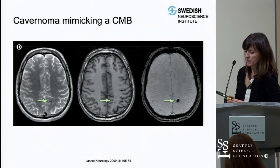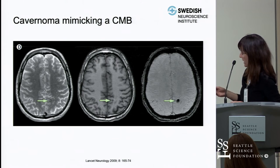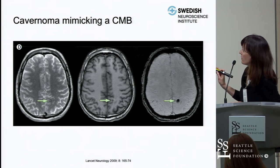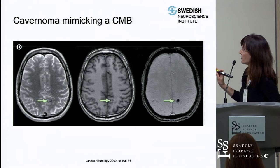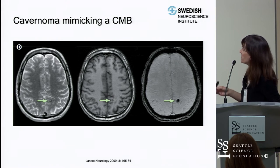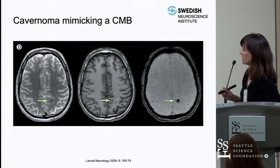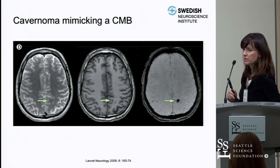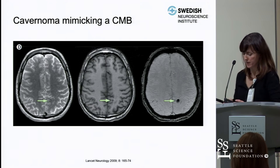This is an example of a patient with a cavernoma. On the left you see hypointensity on T2 images with a central hyperintense portion, and the same on T1 images. It does look dark on susceptibility-weighted images and could be misidentified as a microbleed, but given the bright signal on T1 and T2, this is actually a cavernoma.